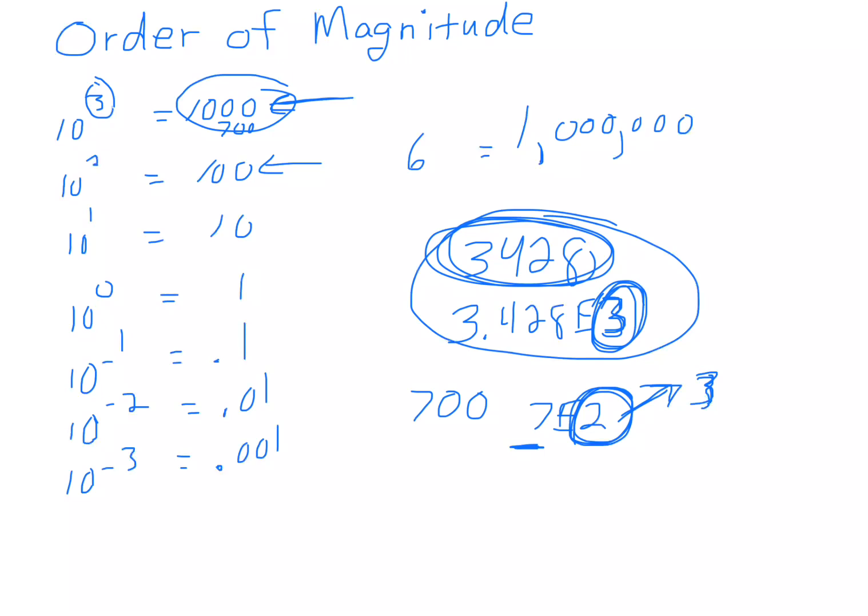So if I had 84, what's the order of magnitude? Well, the scientific notation would be 8.4E1. And you might say, the order of magnitude is 1. No, it's not. It is a 2.